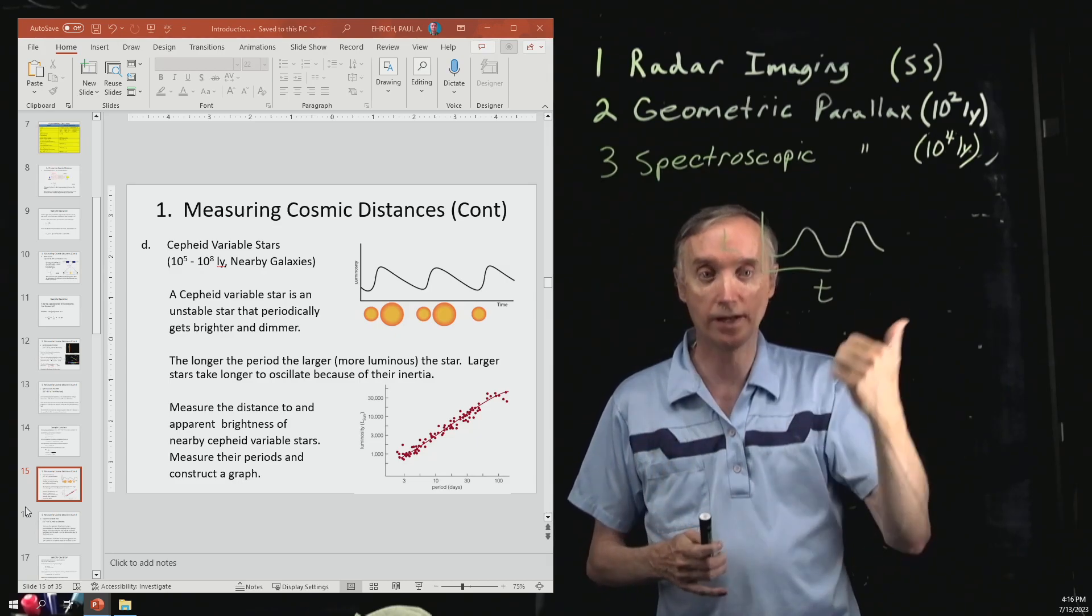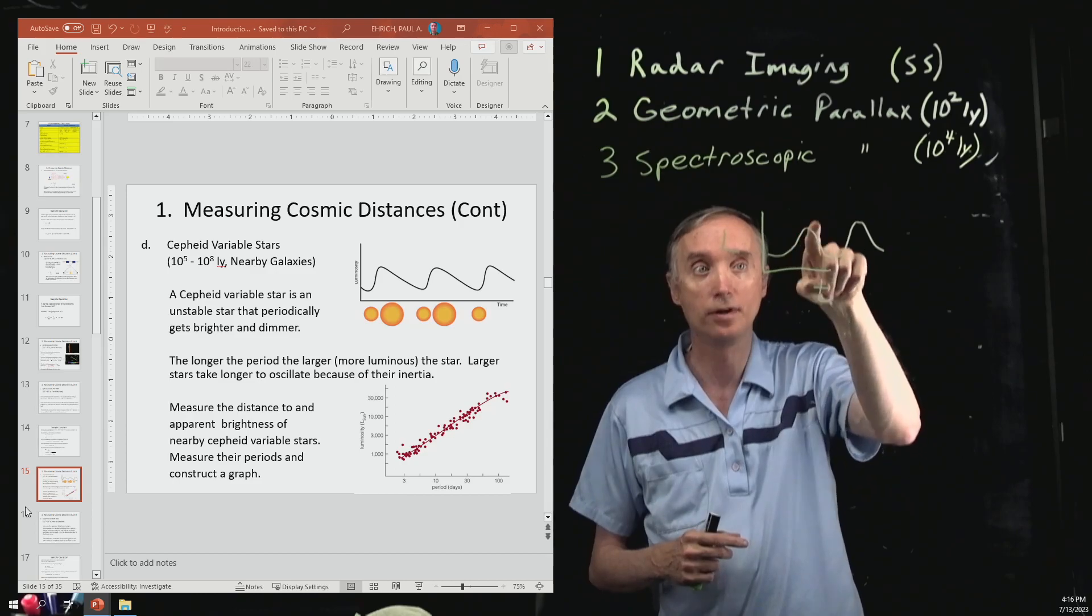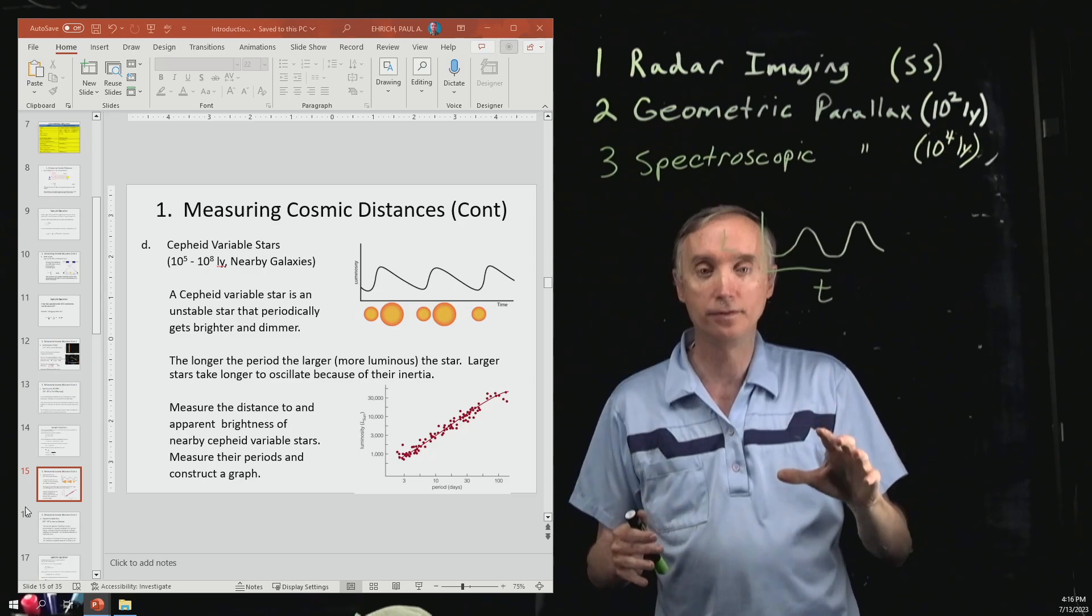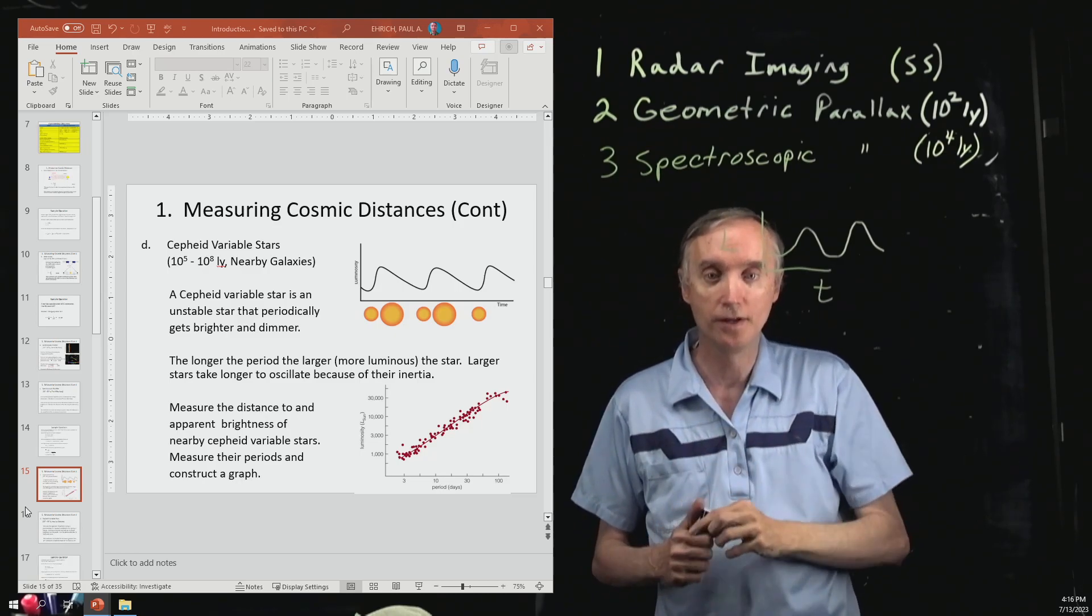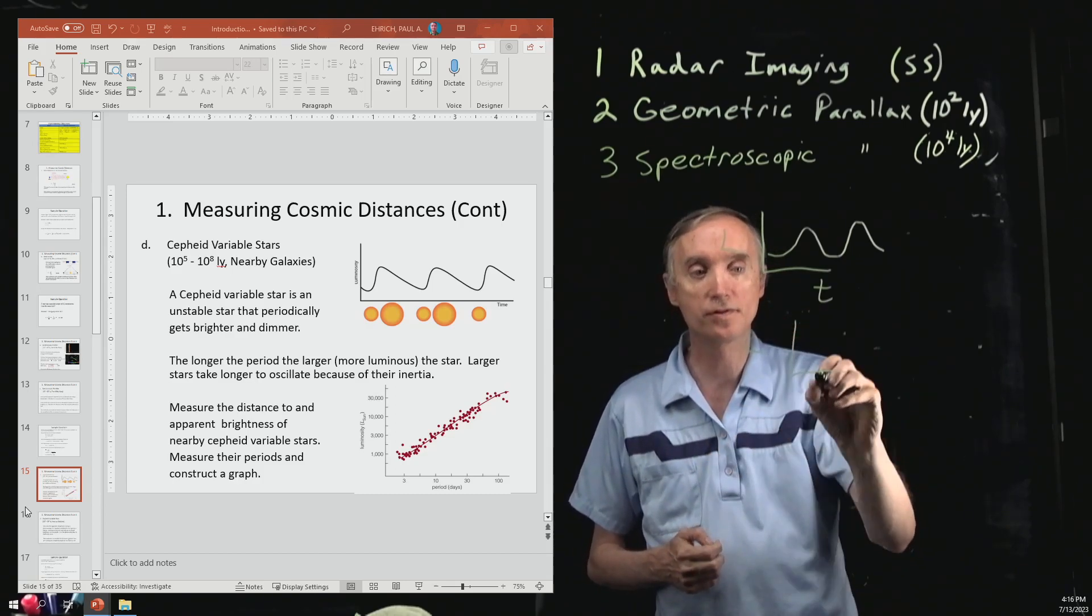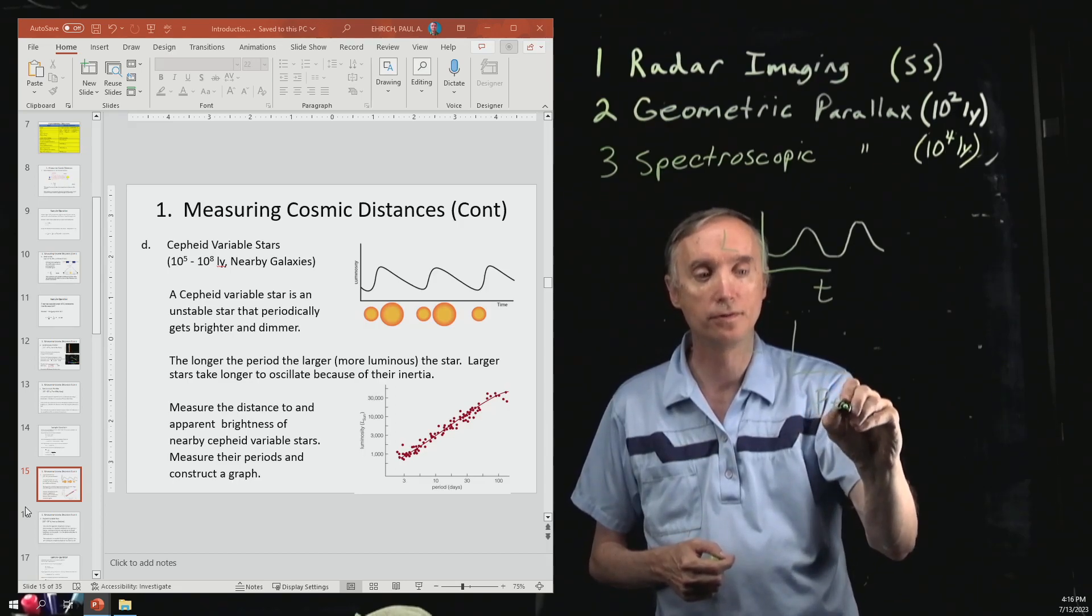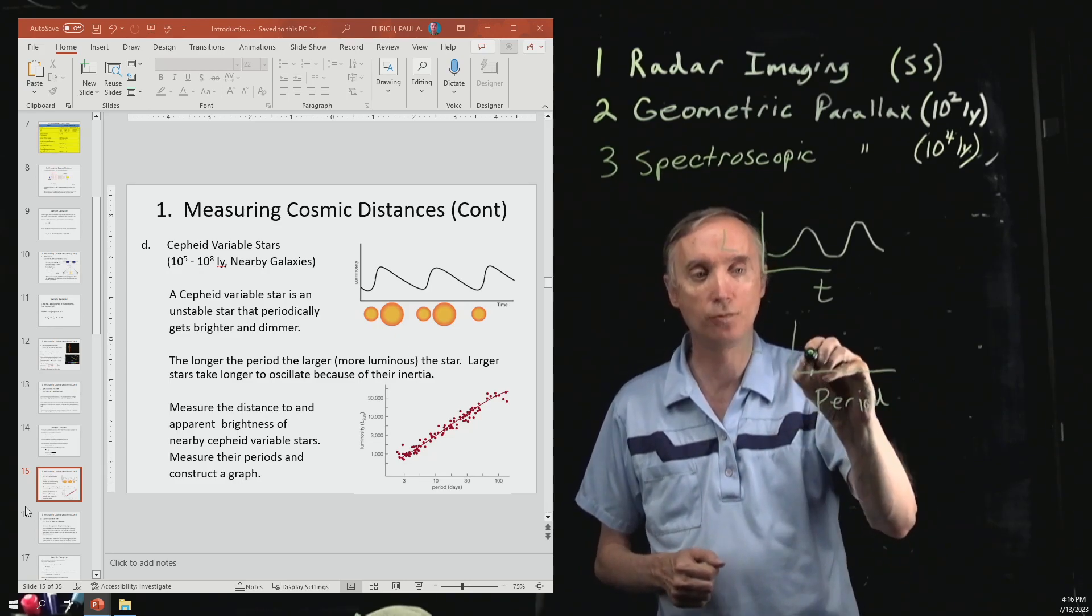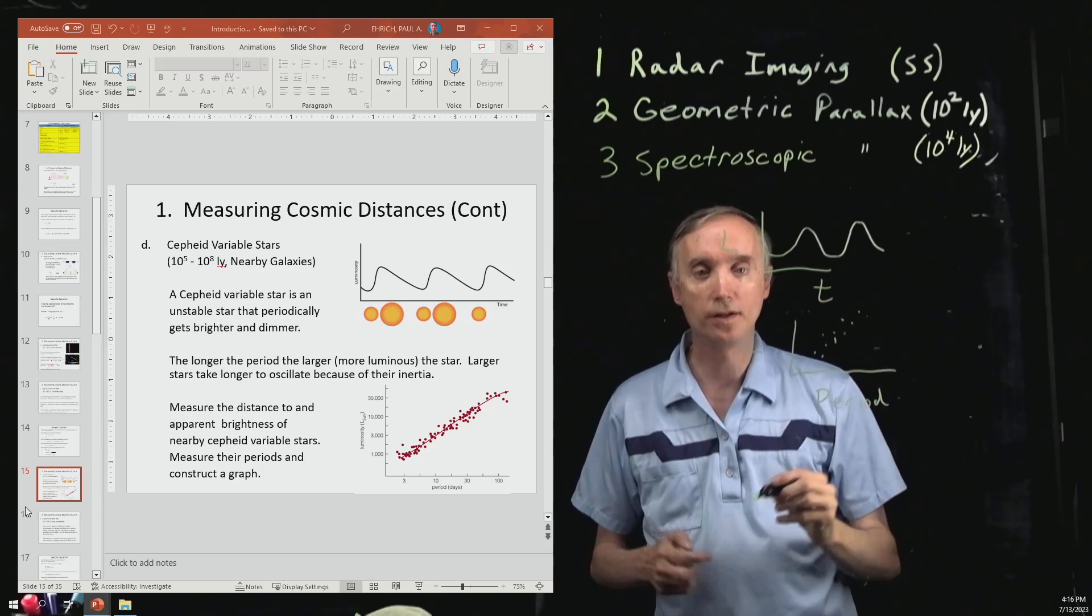Then we get out our stopwatch and we actually measure the periods for every one of those Cepheid variables. And then we plot it. So there on that bottom graph is a graph of the luminosity versus the period of those Cepheid variables. We have measured hundreds of them, and so we get this graph.